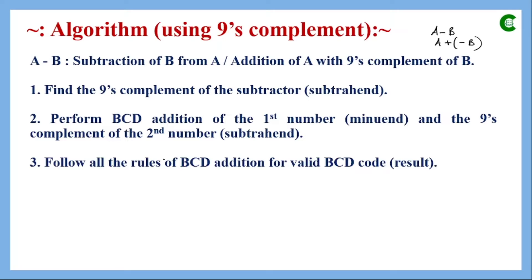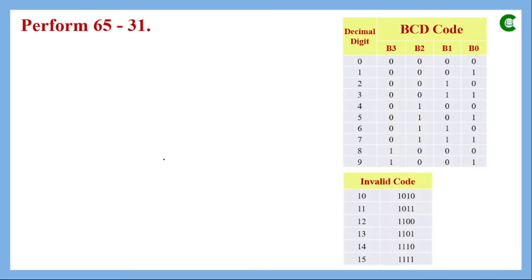After performing the BCD addition, we check whether the result is valid or not, as we learned for BCD addition in our last class. After checking validity, the result has two paths: whether it has a carry or not. If there is a carry, one approach is taken; if there is no carry, another approach is used — we will learn both through examples.